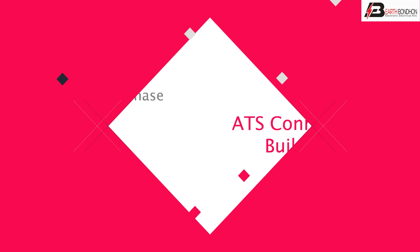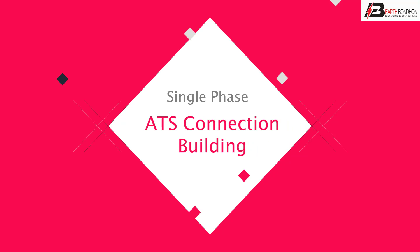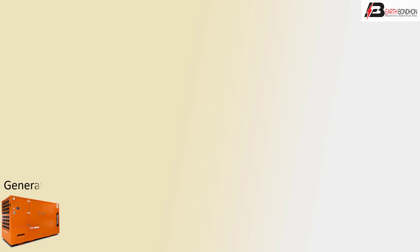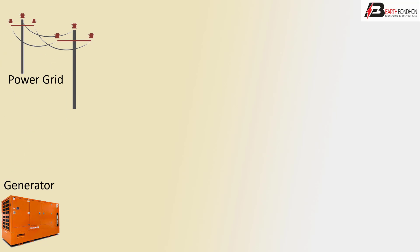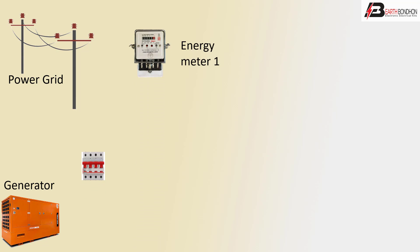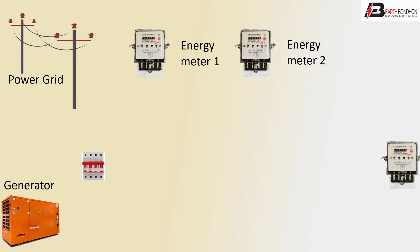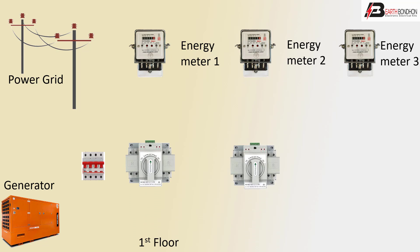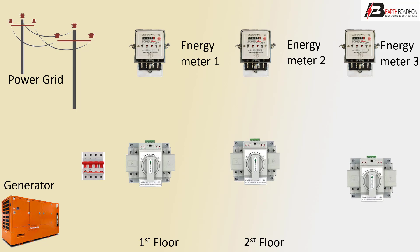Hello viewers, today I discuss the single phase ATS connection building. First connection: generator line or grid line power supply, 4P circuit breaker, energy meter 1, energy meter 2, energy meter 3, sensor bar automatic, follower 1, follower 2, follower 3.